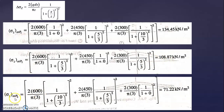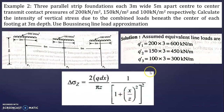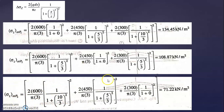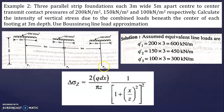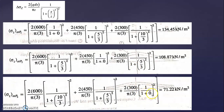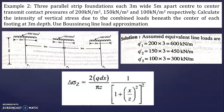For vertical stress at P3: from Q1 (600): x=10, z=3; from Q2 (450): x=5, z=3; from Q3 (300): x=0 since it acts directly at P3. Simplifying all contributions gives σz = 71.22 kN/m². This way you can calculate vertical stress at points P1, P2, and P3 under parallel strip foundations. I hope all of you understood. Thank you.